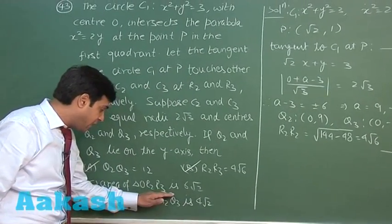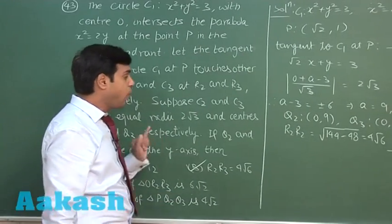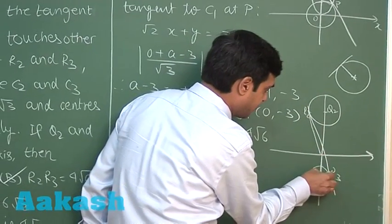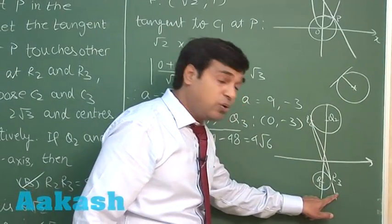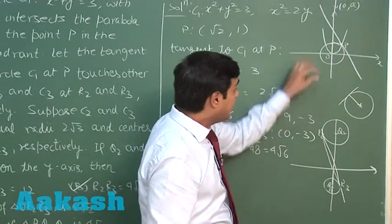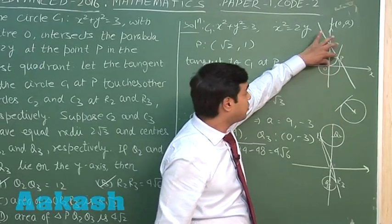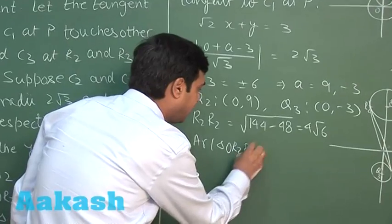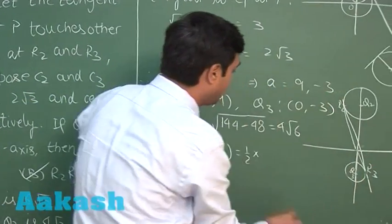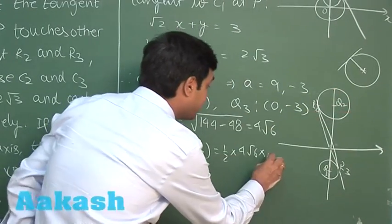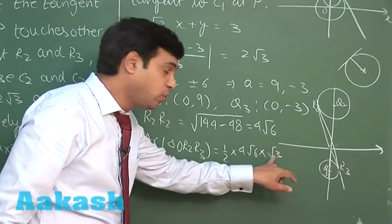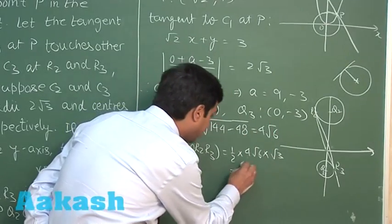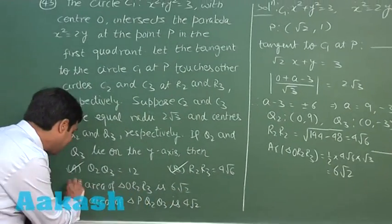For option C, area of triangle OR2R3: the base is R2R3 = 4√6 and the height is the perpendicular from O to the tangent line, which equals the radius of C1 = √3. Area = ½ × 4√6 × √3 = 2√18 = 6√2 square units. Option C is also correct.